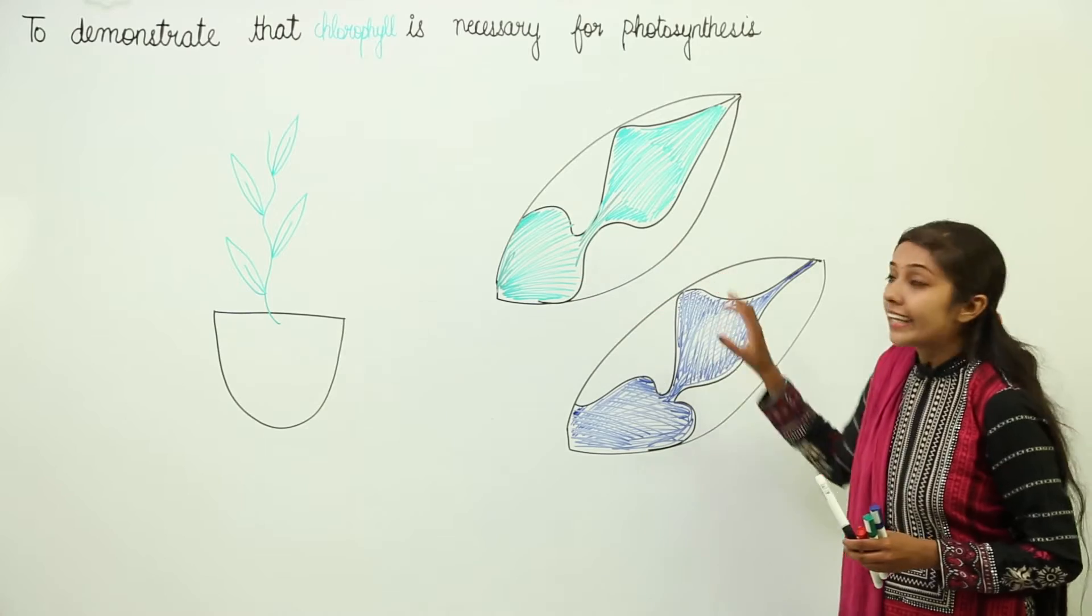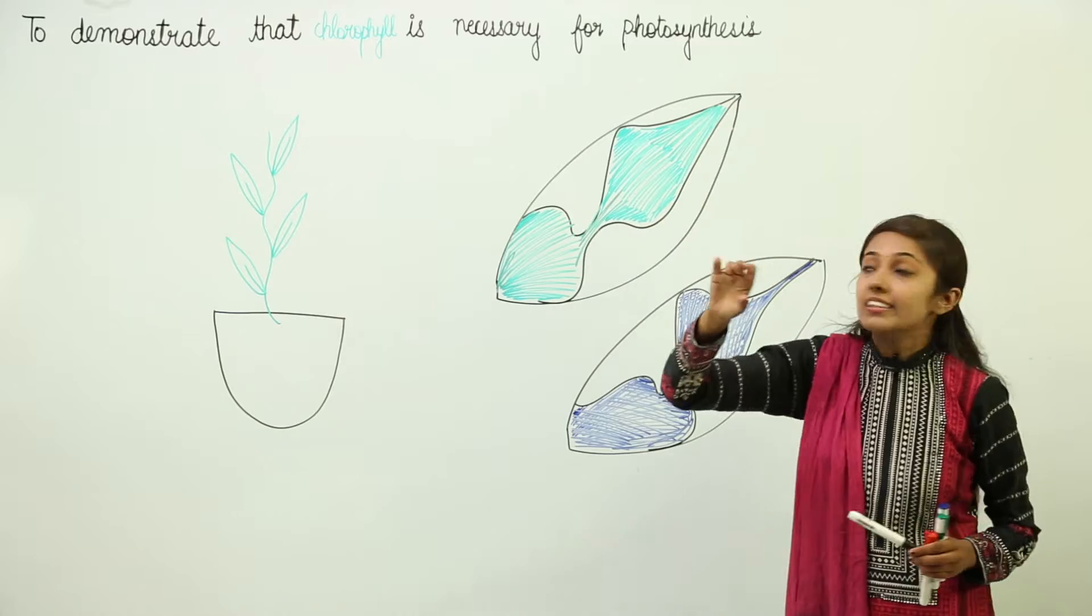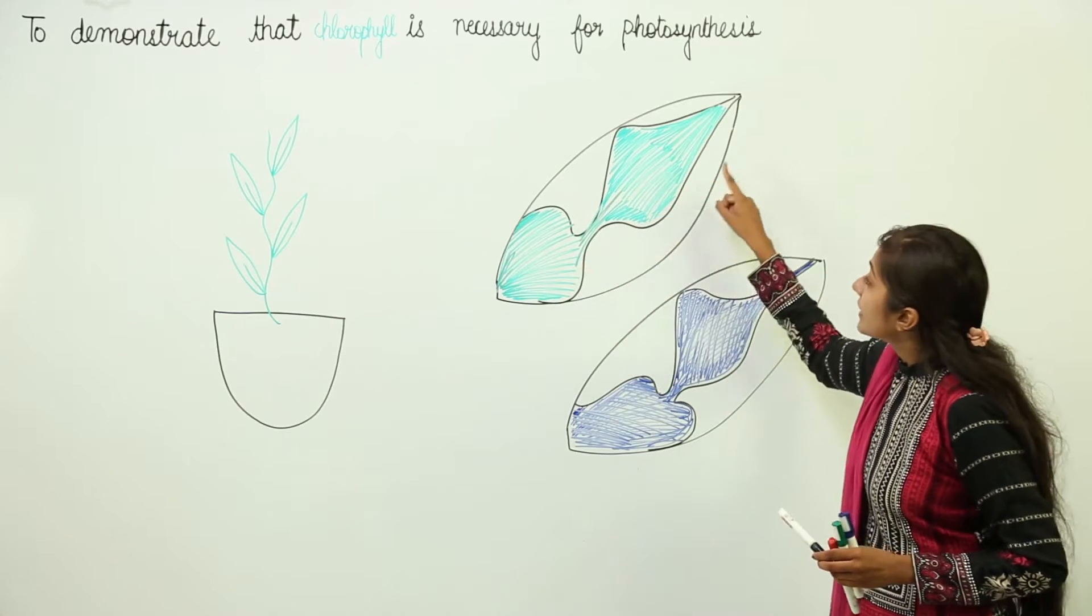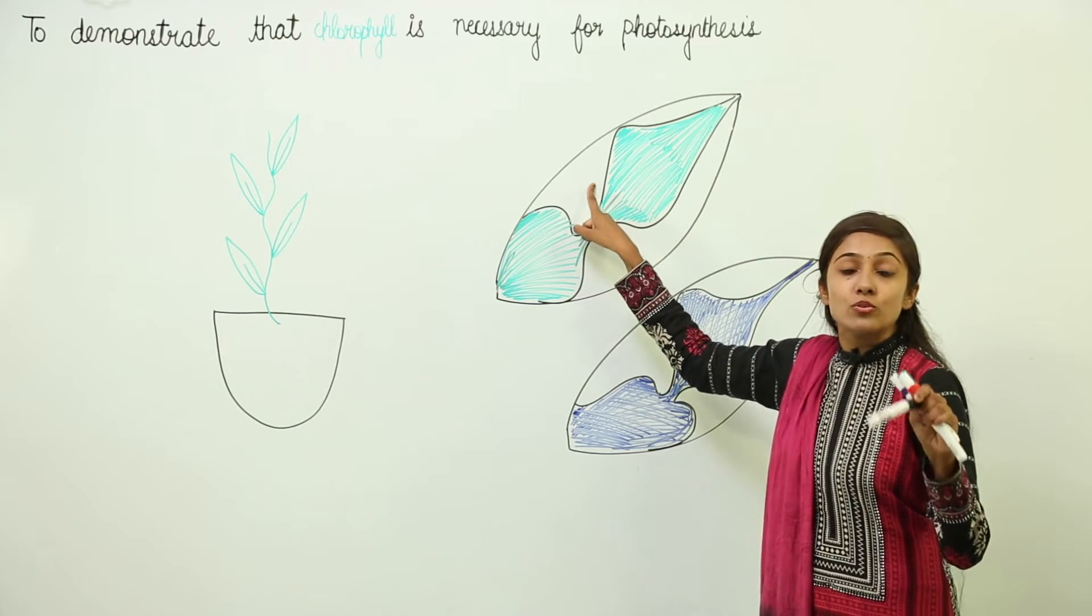So these are variegated leaves. This region has the green patch which contains chlorophyll, and this region is the yellow patch which does not contain chlorophyll.